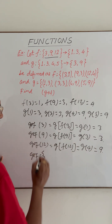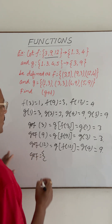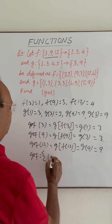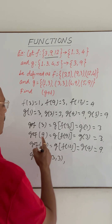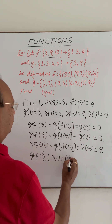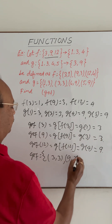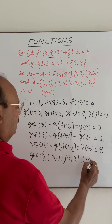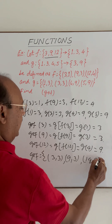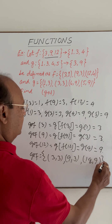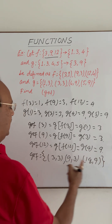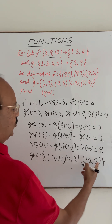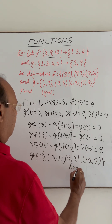So we are getting the function g∘f, which can be defined with the help of a set of ordered pairs: (3,3), (9,3), and (12,9). This is the answer.